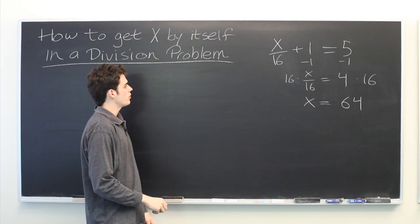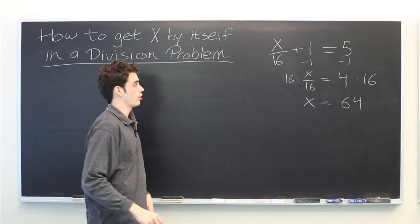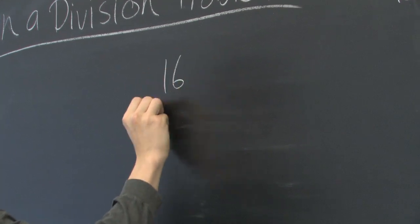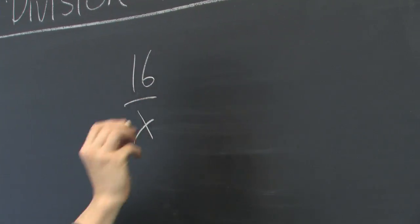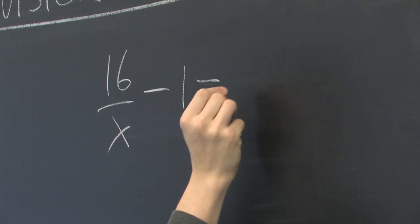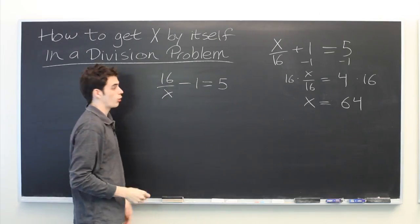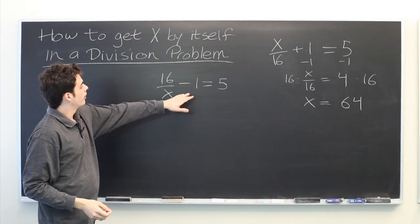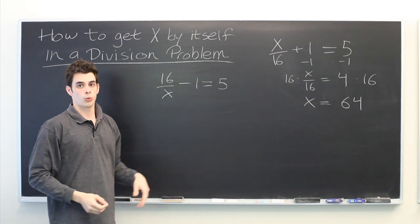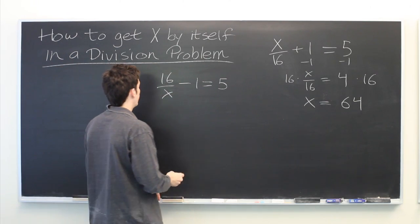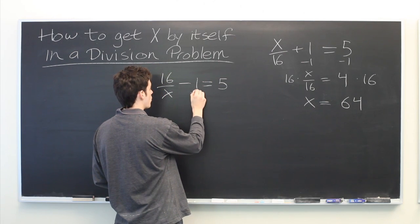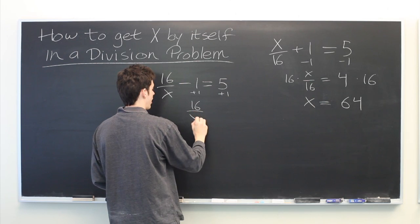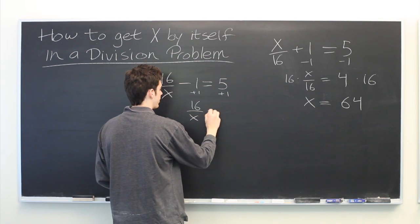But suppose that you're given a slightly different configuration. What if it's 16 divided by x minus 1 equals 5? What can we do here? Well, again, let's bring over all the constants to one side of the equation. We'll do that by adding 1. So we get 16 divided by x equals 6.